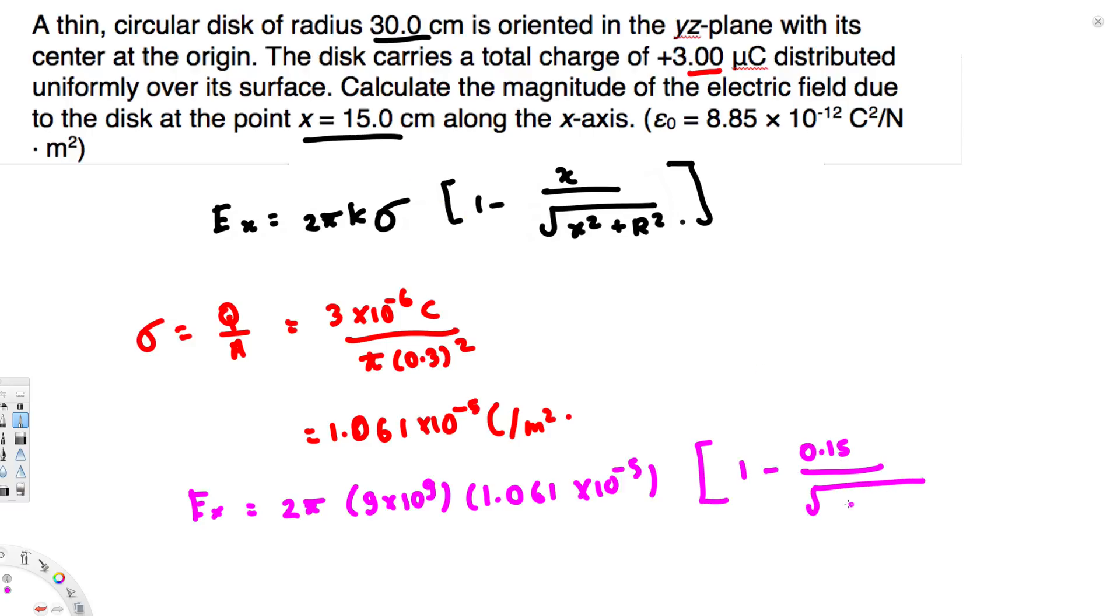divided by √(0.15² + r²)]. The radius of the disk is 30 centimeters, or 0.3 meters, squared. If you calculate this, you get 3.31 × 10⁵ newtons per coulomb.